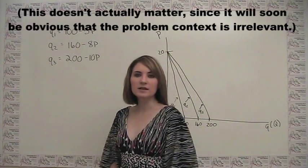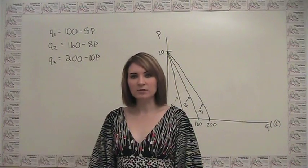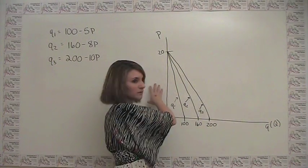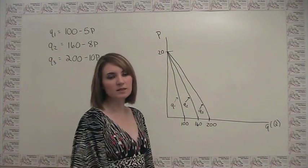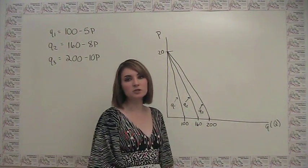So given this, what do each of the individual demand curves look like? And I've plotted them here.